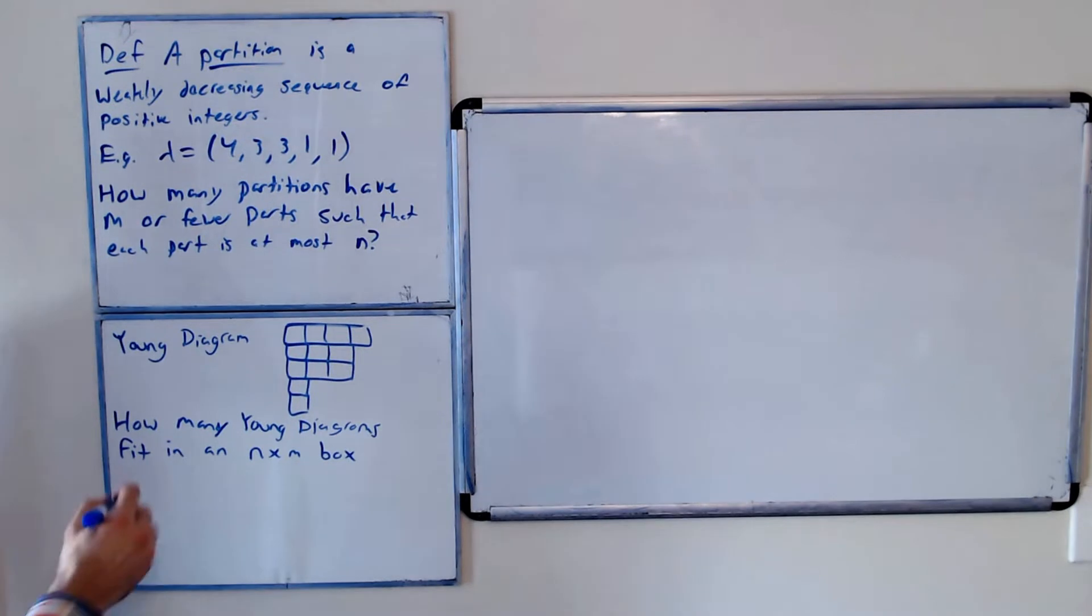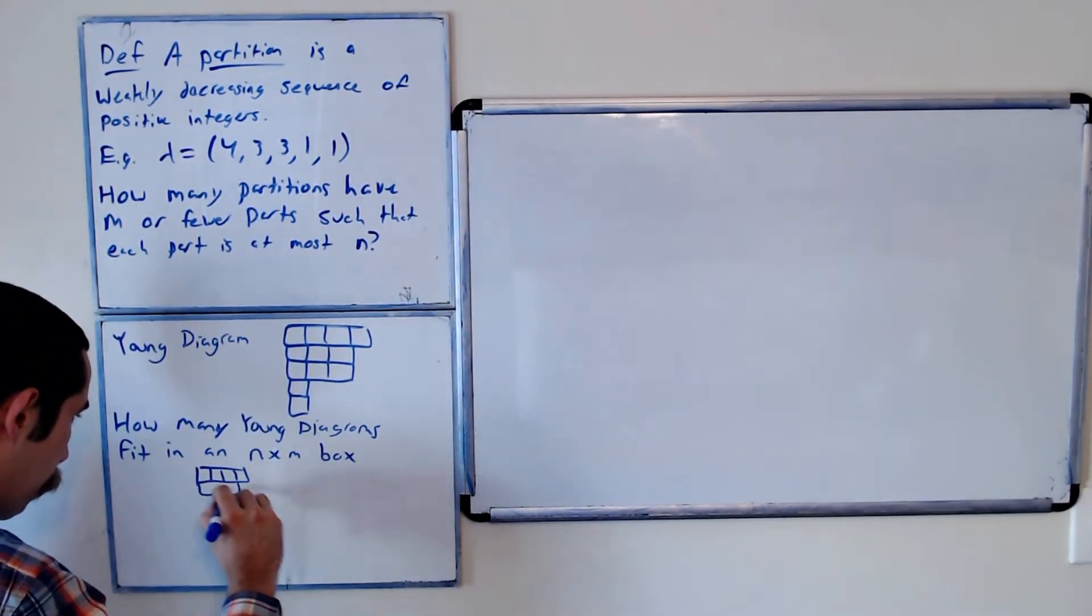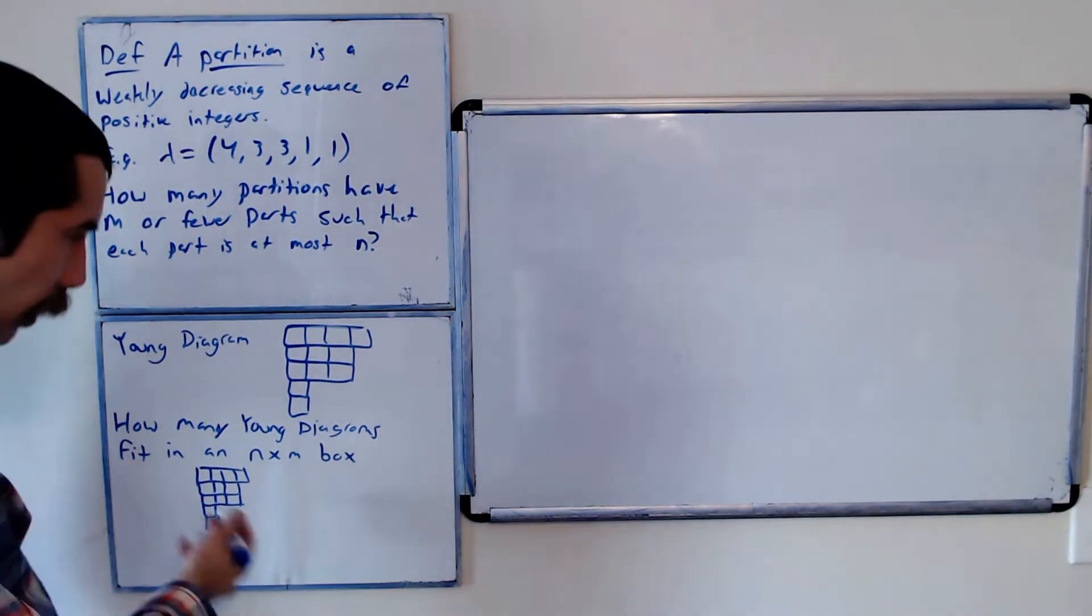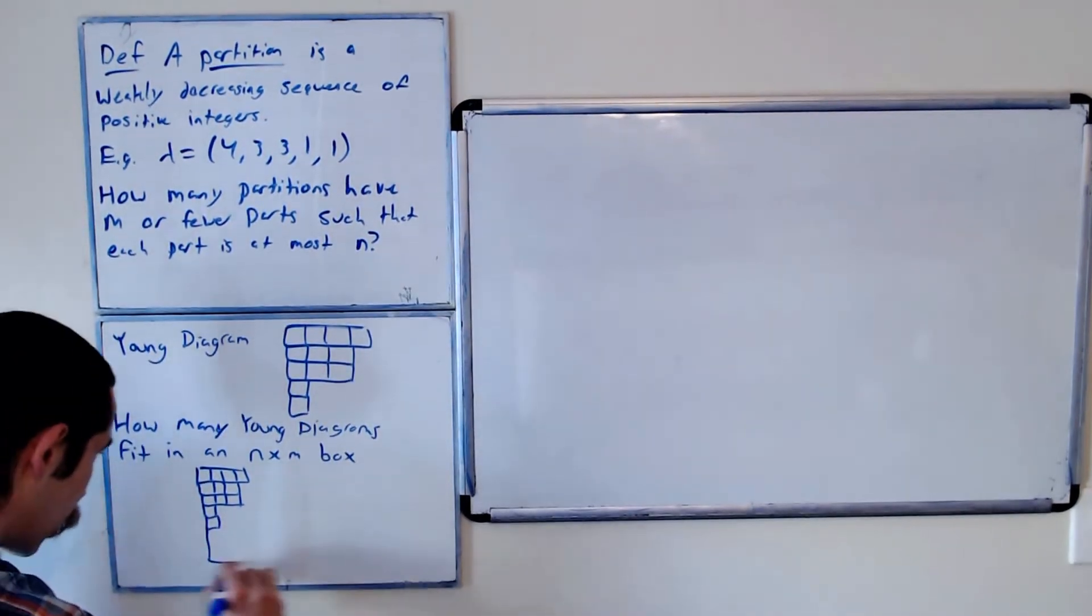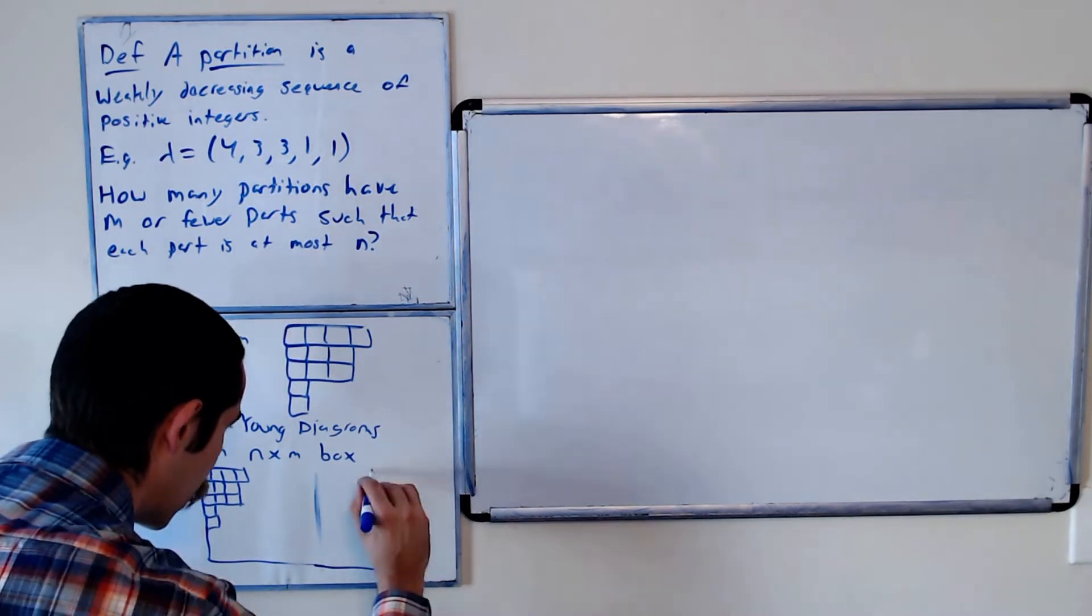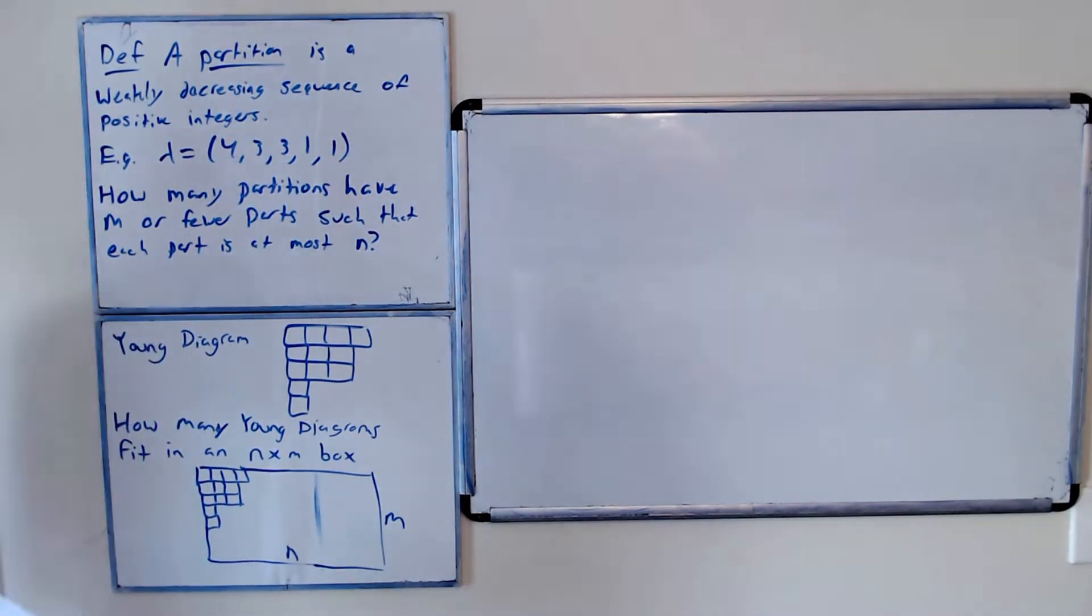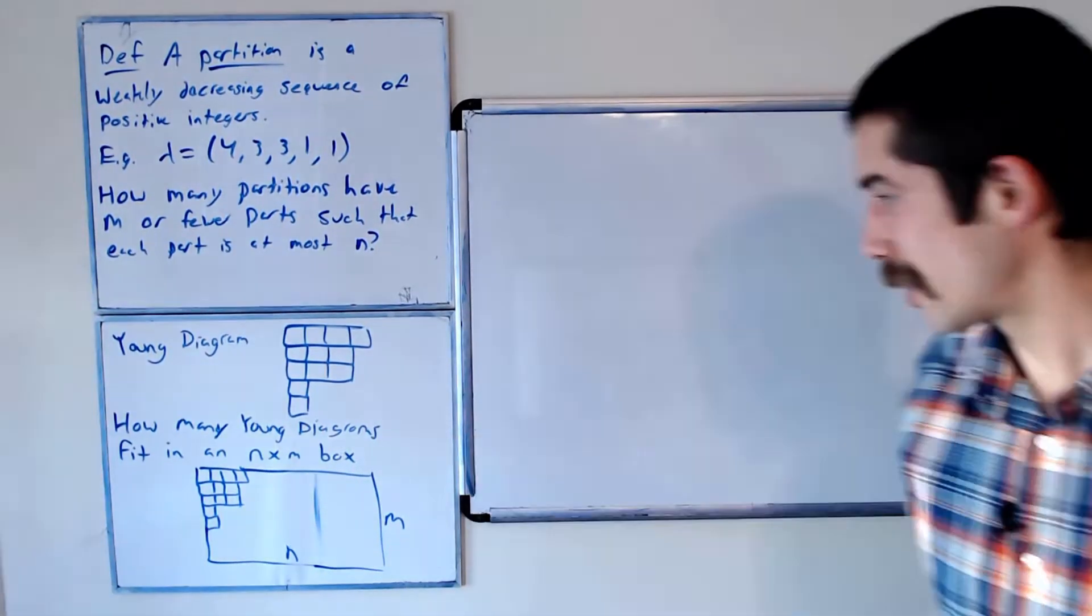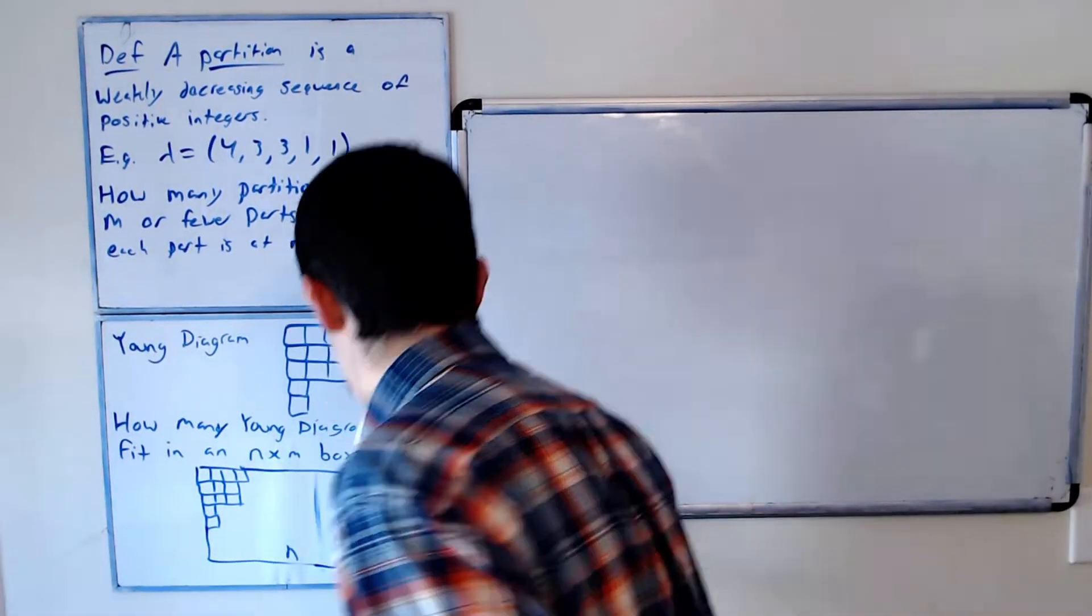Just to clarify, here's our drawing again. Suppose M was much bigger than 5 and N was much bigger than 4, it would look like this. Let's make it a rectangle so you can tell it's a rectangle. That's what our question simplifies to, or is restated as.